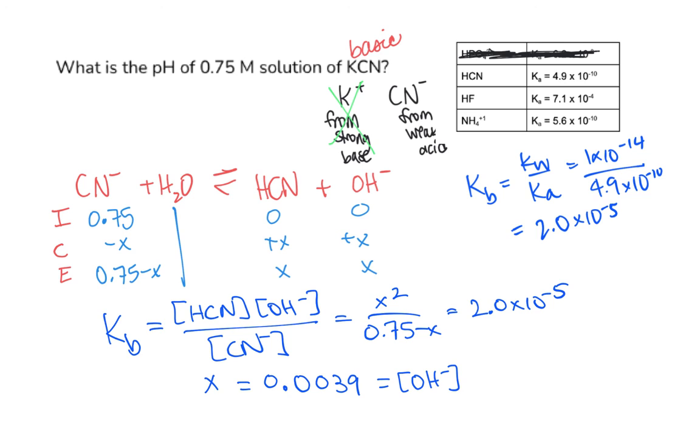I'm going to take the negative log of that and get my pOH which would be 2.41. The question was asking for pH so take 14 minus the 2.41, my pH is going to be 11.59. That's a basic pH and we did predict that was going to be a basic salt, so that all checks out.